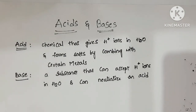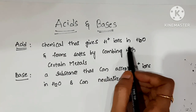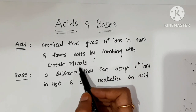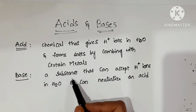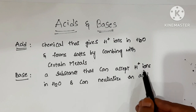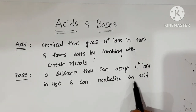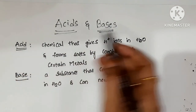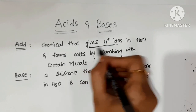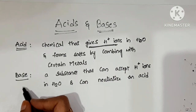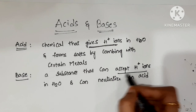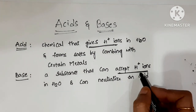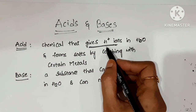Acid is defined as a chemical that gives H plus ions in water and forms salts by combining with certain metals. Base is defined as a substance that can accept H plus ions in water and can neutralize an acid. Remember: acid gives H plus ions, and base accepts H plus ions.